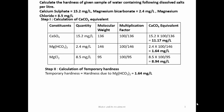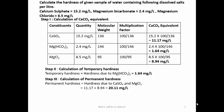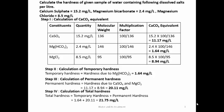Next step is calculation of temporary hardness. Temporary hardness is due to carbonates and bicarbonates. Among the three salts, only magnesium bicarbonate is present, so temporary hardness = 1.64 mg/L. For permanent hardness — due to sulphates, chlorides, and nitrates — the first and third salts contribute. Total permanent hardness = 20.11 mg/L. Total hardness = temporary + permanent = 21.75 mg/L.